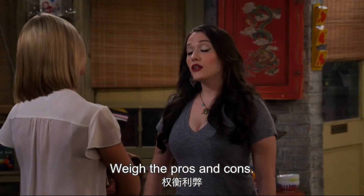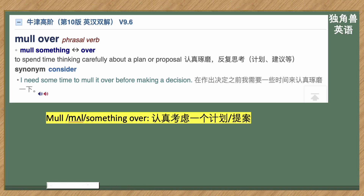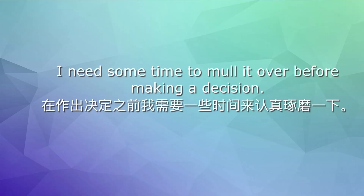You said you were going to mull it over, weigh the pros and cons. 我们来看 mull over 这个短语。To spend time thinking carefully about a plan or proposal — 认真考虑一个计划或者提议。I need some time to mull it over before making a decision. 在做出决定之前，我需要一些时间来认真考虑一下。